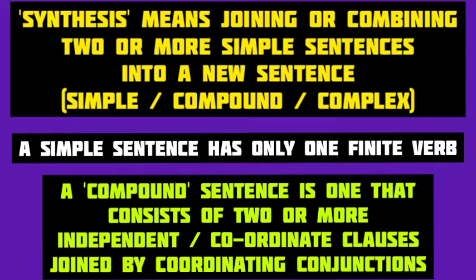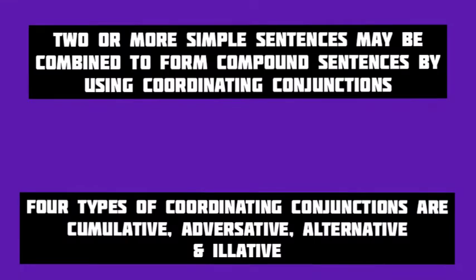We must recognize the coordinating conjunctions to identify compound sentences. We can combine two or more simple sentences with the help of coordinating conjunctions to form a compound sentence. It's important to identify the coordinating conjunctions well and not confuse them with subordinating conjunctions.